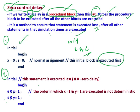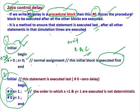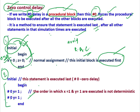So first this block will be executed. Whatever we write inside an initial block, all the statements are executed at zero time step — that means zero nanoseconds. So when the simulation starts, first this line will be executed: x equal to zero and z equal to zero. This is a normal assignment, so this will be executed first. Because we have included #0 here, this initial block will be executed only after the first block gets executed.